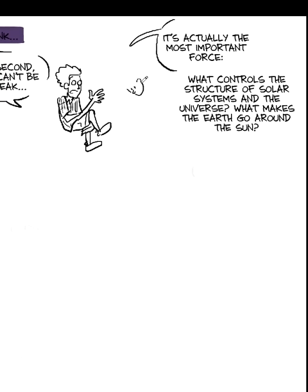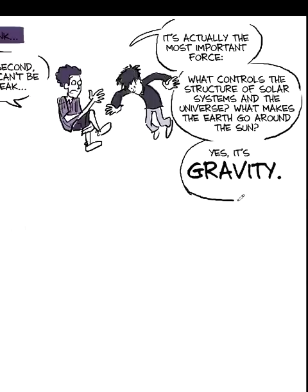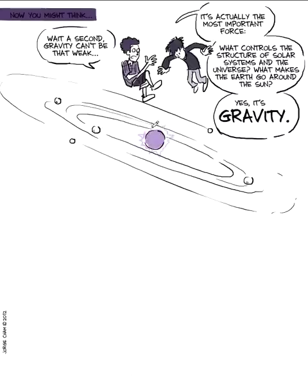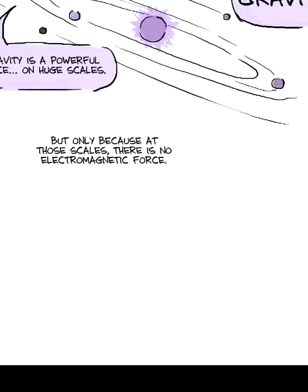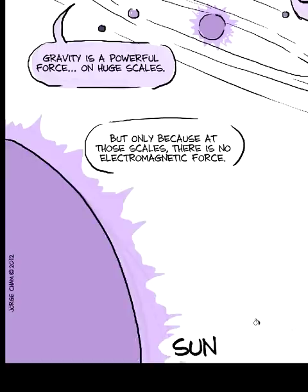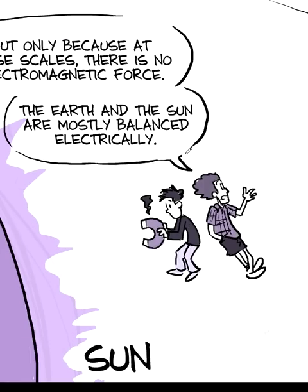Now you might think, wait a second, gravity can't be that weak. It's actually the most important force because what controls the structure of solar systems and the universe? Why does the Earth go around the Sun? Well, it's gravity. And so gravity is a very powerful force on huge scales. But that's just because on those scales there is no electromagnetic force. It's not like there's an electromagnetic force between the Sun and the Earth. The Sun is mostly balanced, and the Earth is mostly balanced electrically.